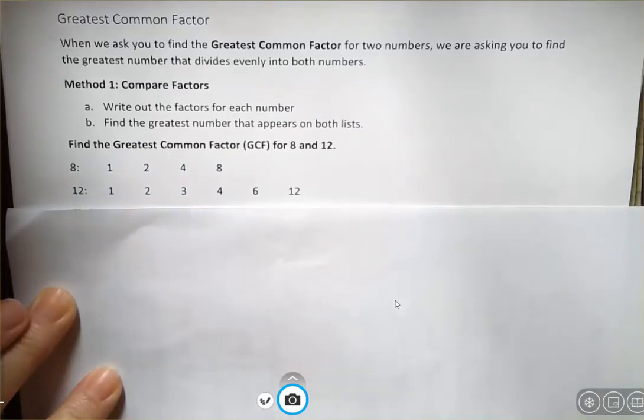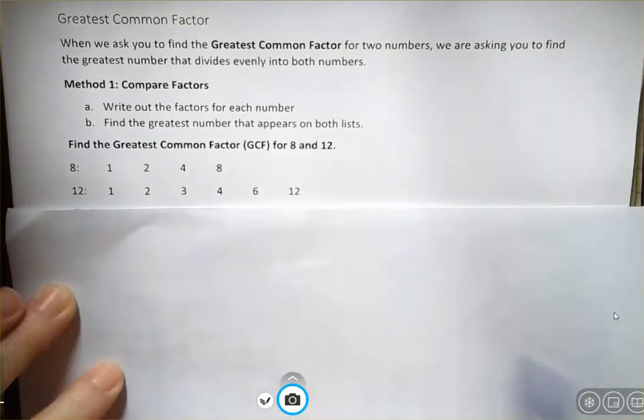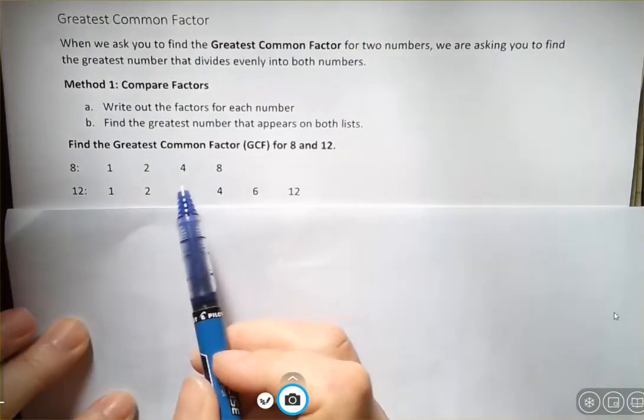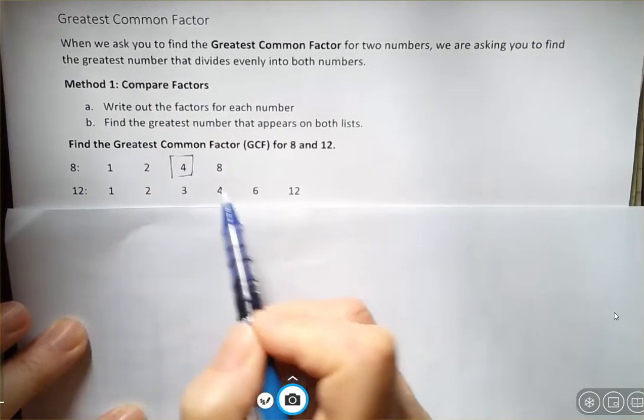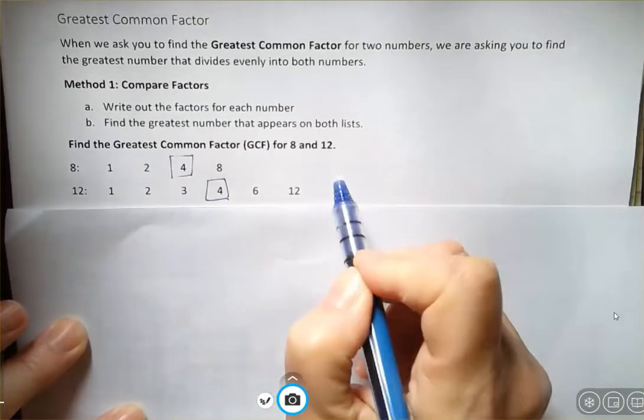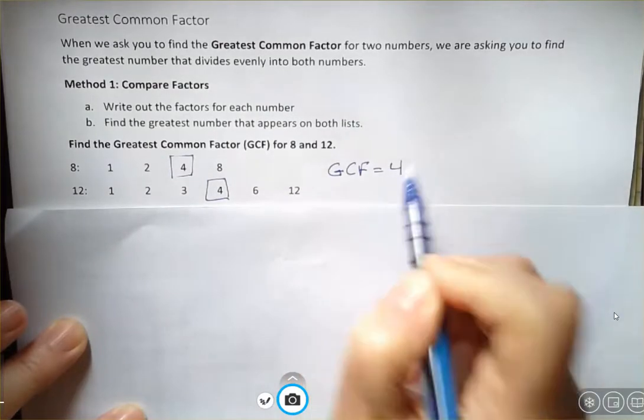So they have greater factors. Eight has a factor of eight, 12 has six and 12. But we're talking about the one that goes into both of those, and we're talking about the greatest factor that goes into both. So their greatest common factor is four.